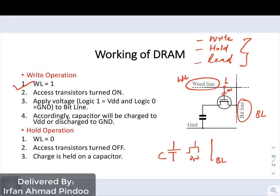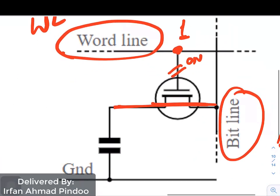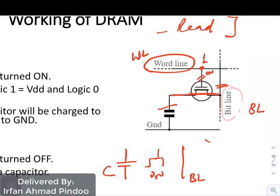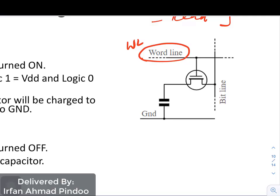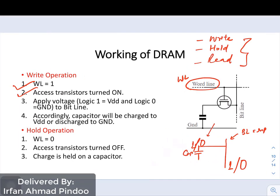So the first point is to keep WL as 1. Once WL is 1, the transistor acts as a short, and the capacitor is now connected to the bit line. Whatever value you want to write, provide it on the bit line. Simplifying the circuit, you just have the capacitor connected to the bit line. If the input is 1, the capacitor stores 1; if the input is 0, the capacitor stores 0. Apply logic 1 or logic 0 to the bit line and the capacitor will store accordingly. This completes the write operation in DRAM.